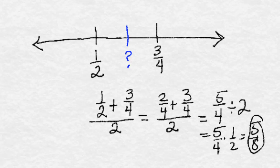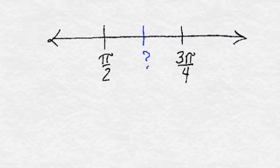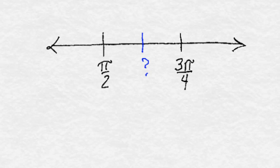So the number halfway between 1 half and 3 fourths is 5 eighths. And you can even do this if you find yourself in a trigonometry class, where you see numbers like pi over 2 and 3 pi over 4. To find the number halfway between pi over 2 and 3 pi over 4, we're going to do exactly the same thing.